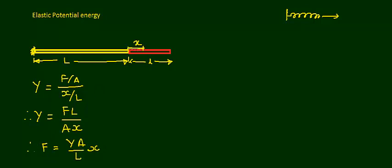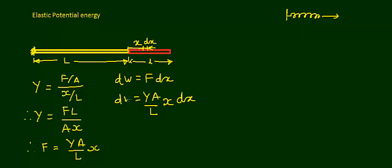This is the force that must be applied when the wire has elongated by length x. Now if the wire further elongates by an infinitesimally small length dx, the small work done dW is given by F·dx, which equals (YA/L)·x·dx. This is the small work done to elongate the wire by the small displacement dx.